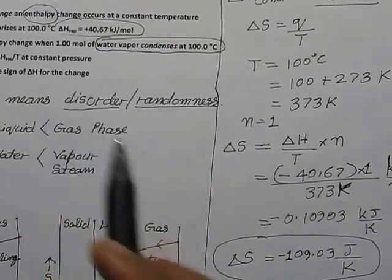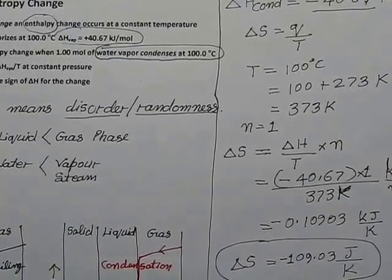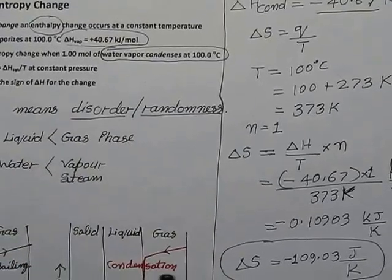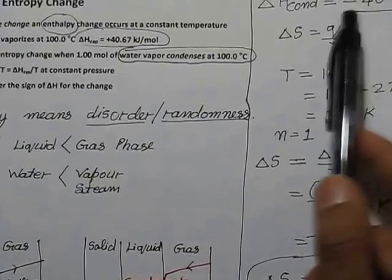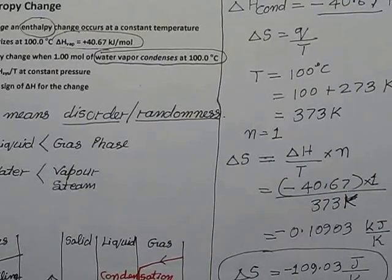This is the way we have to calculate change in entropy for phases. Basically, if energy or ΔH is given for boiling, you have to just use the same value but sign will change from plus to negative. We will solve another question in the next video.